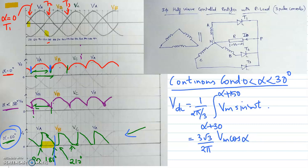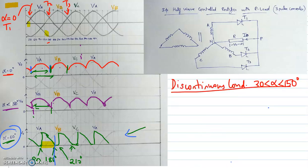Similarly, you also need to find the average output RMS voltage V0-rms, which you should derive by yourself. Now we are going to derive the average load voltage and the RMS voltage for discontinuous conduction mode, where the firing angle alpha is greater than 30 degrees. The maximum firing angle for a resistive load is 150 degrees, so alpha ranges from 30 to 150 degrees.